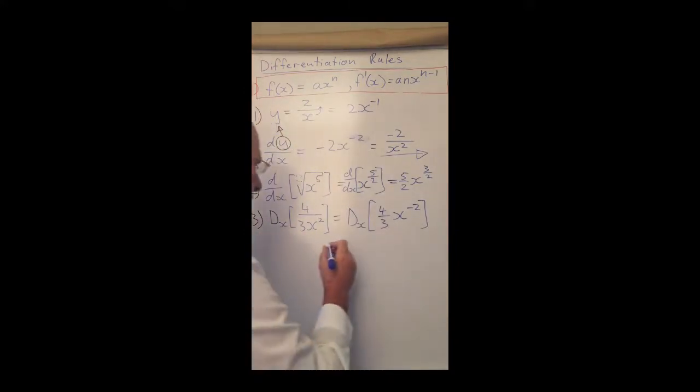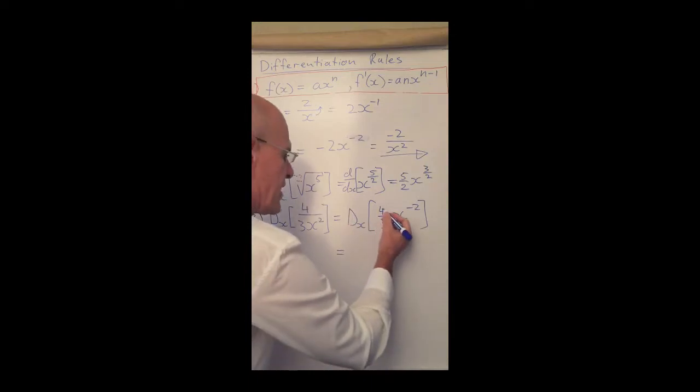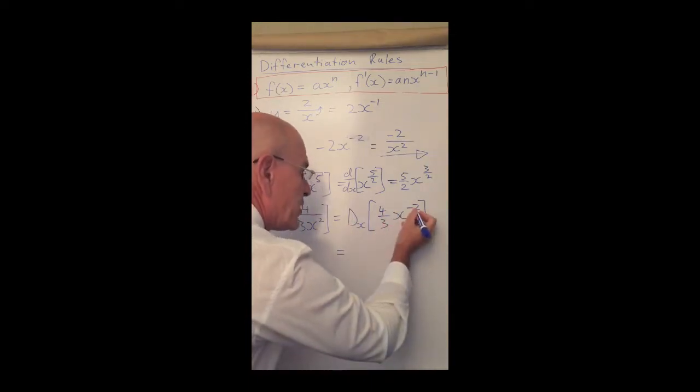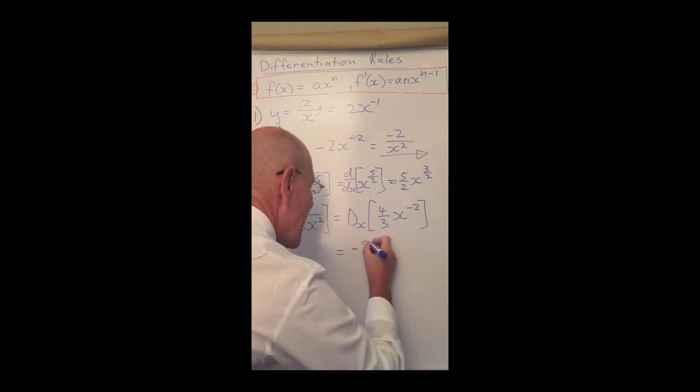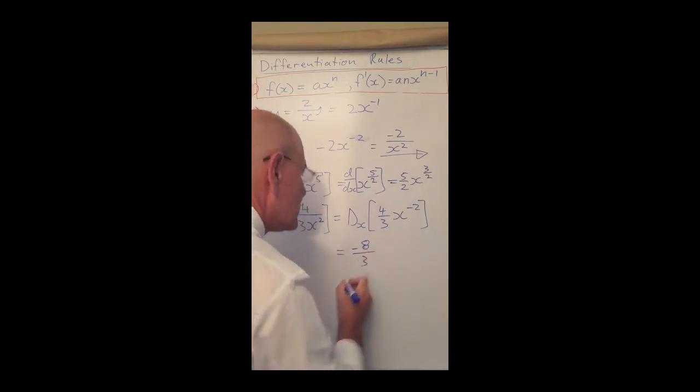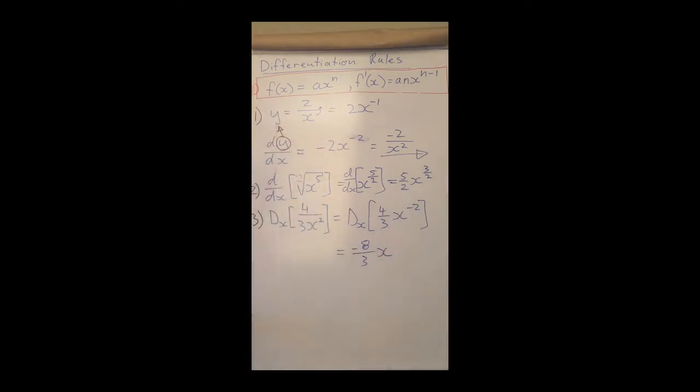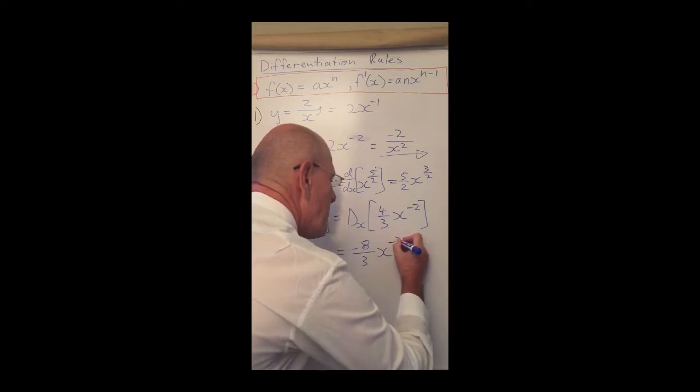Now I'm going to d/dx this expression, so I'm not going to write d/dx again because I'm going to apply the differentiation rule. What do I do is I say 4 over 3 times minus 2 gives me an answer of minus 8 over 3, x to the power of - and now what do I do? I need to subtract 1 from minus 2, and minus 2 minus 1 gives me minus 3.